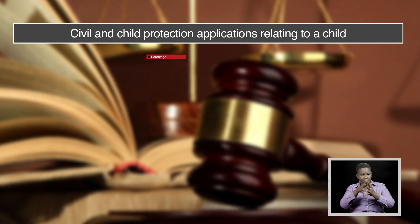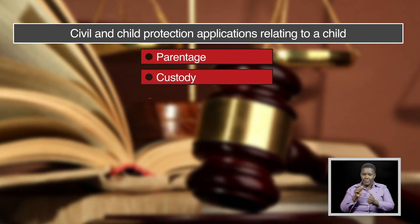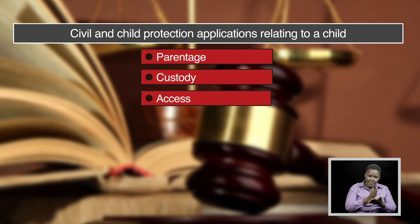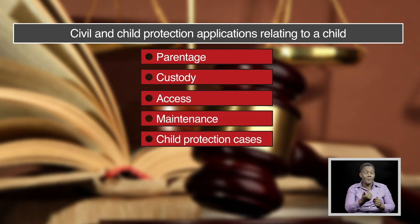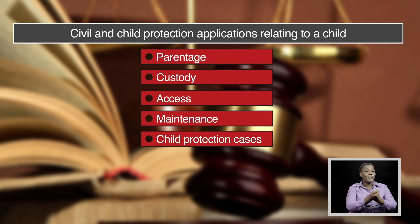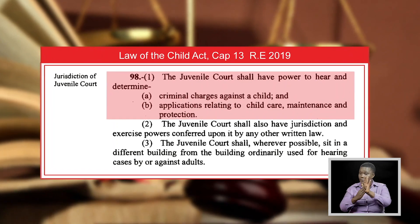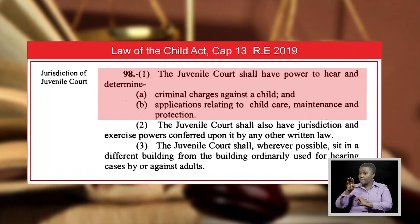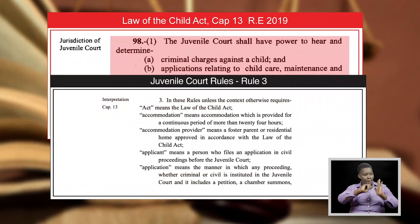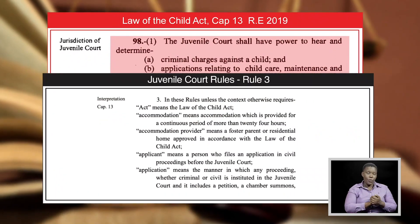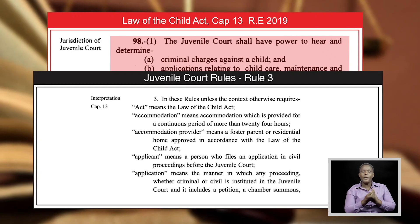Civil and child protection applications relating to a child include parentage, custody, access, maintenance, and child protection cases. This is provided under Section 98, Subsection 1B of the Law of the Child Act, and Rule 3 of the Juvenile Court Rules, which defines child care applications.